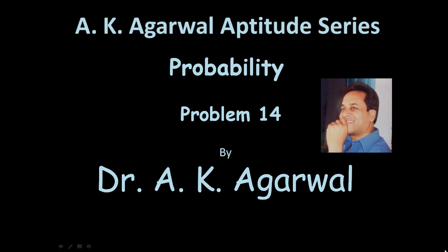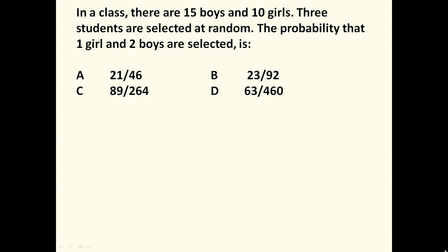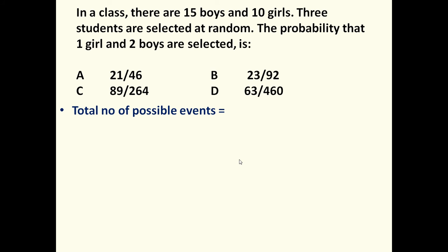Hello friends and welcome to AK Agrawal aptitude series. In this session we are going to learn a technique for solving a problem on probability. The given problem is: in a class there are 15 boys and 10 girls, 3 students are selected at random. The probability that 1 girl and 2 boys are selected is — 4 options are given.